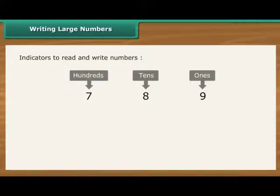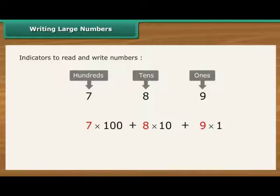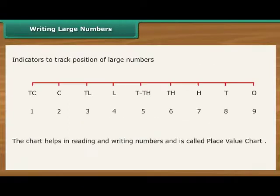In a decimal number system, the value of a digit depends on its place or position in the number. Each place has a value of 10 times the place to its right. It can be extended to crores. The chart helps in reading and writing numbers and is called place value chart.